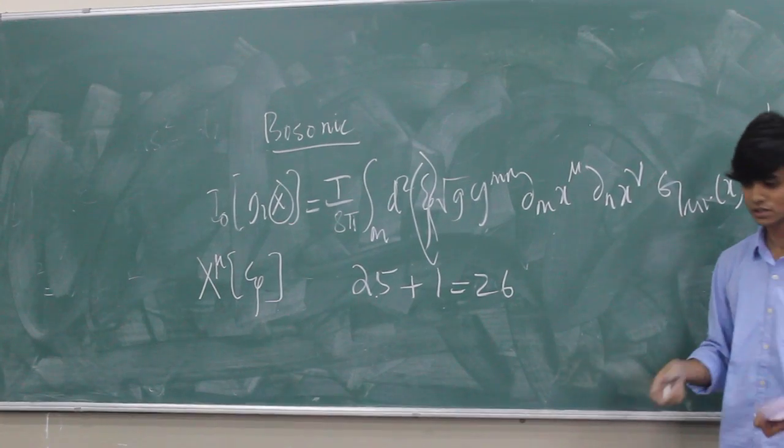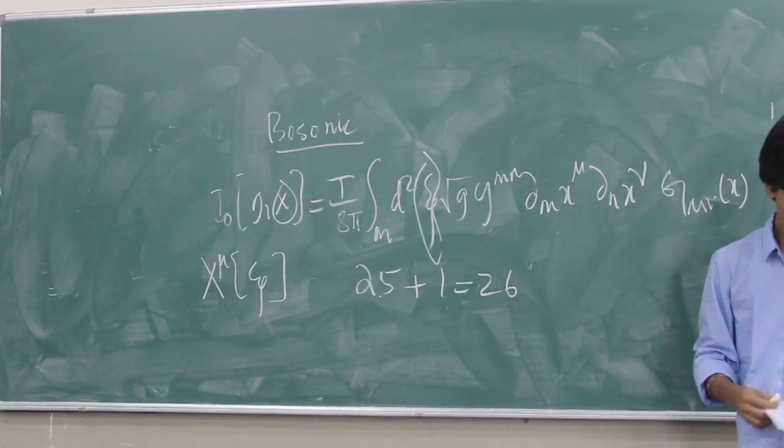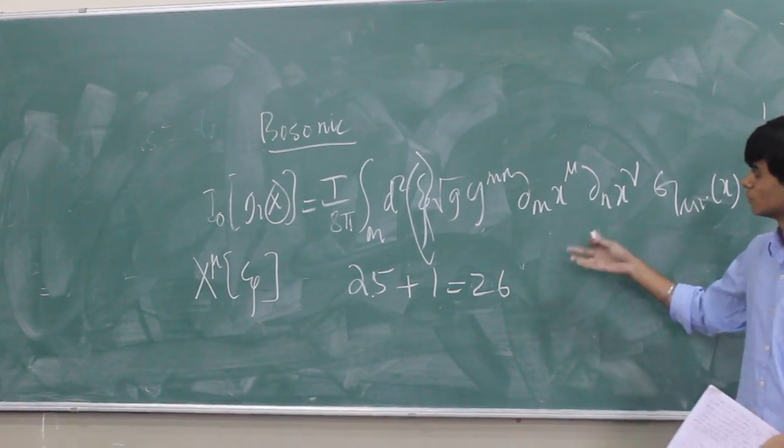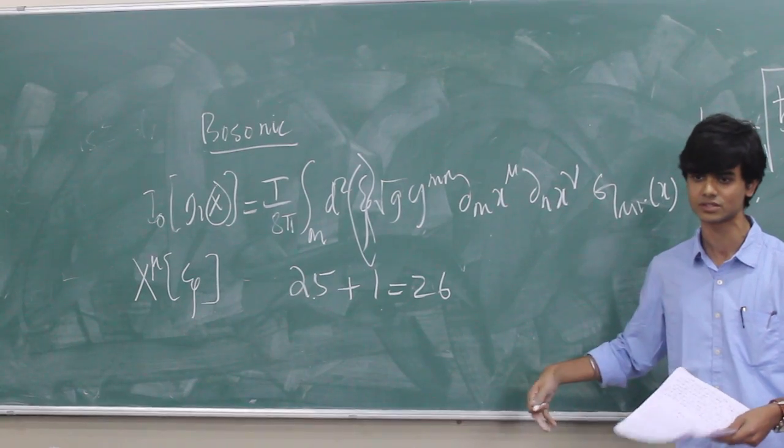And that way, other dimensions were also found with the other string theories which had both Bosons and Fermions. And they gave almost the same results. 10, 10 dimensions, 11 dimensions, 25 dimensions, and so on. But then came one mathematical physicist named Edward Witten.